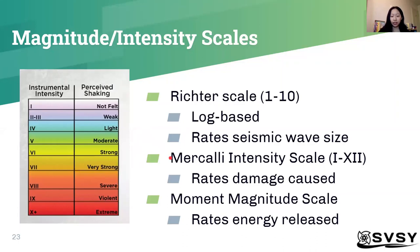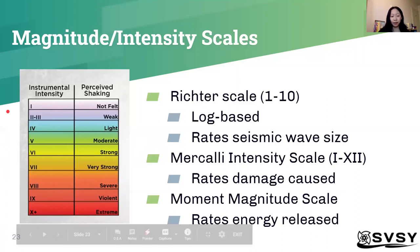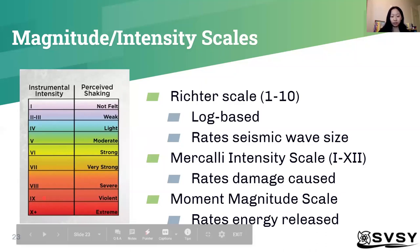The Mercalli intensity scale goes from 1 through 12 in Roman numerals and rates the actual damage caused, which is consistent with the definition of an intensity scale — it rates the shaking and what actually results from the earthquake. The moment magnitude scale rates the actual amount of energy released, similar to the Richter scale in that it measures the earthquake itself.